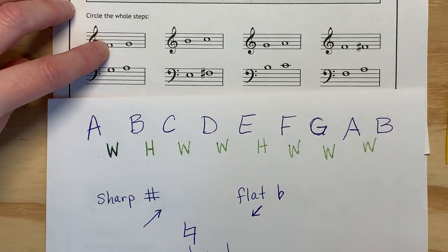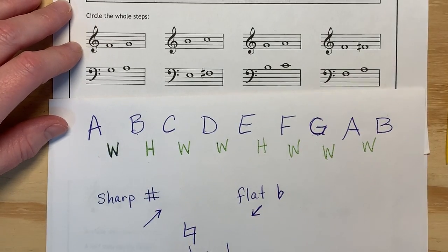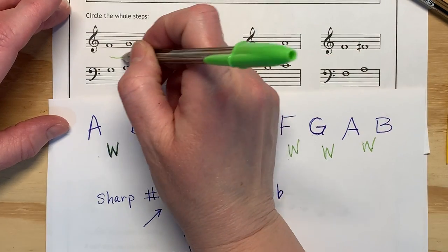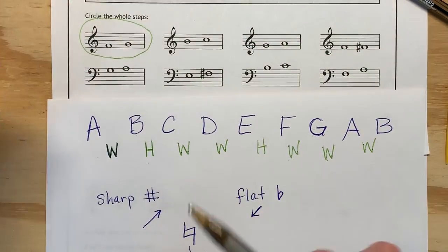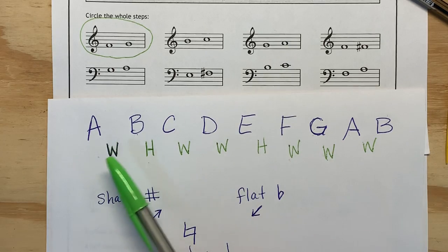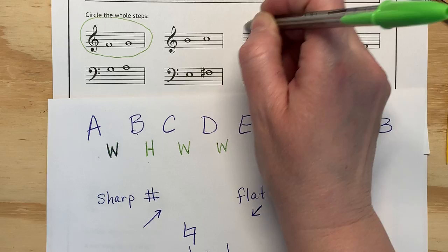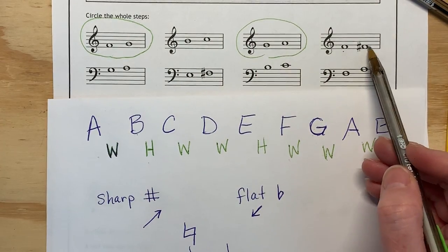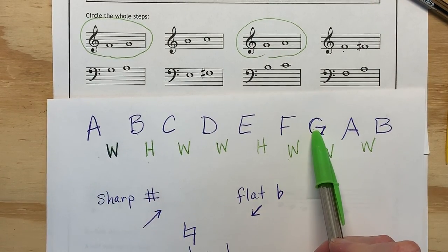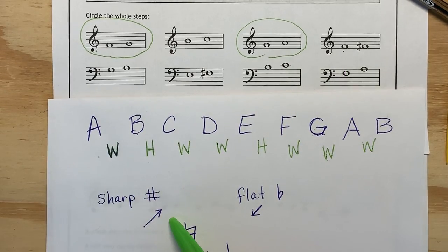So if we go from an F to a G, that is a whole step. The next one is a B to a C. So we see a B to a C is a half step, so don't circle it. A G to an A, whole step. So we can circle that one. An F to an F sharp. That's that in between one. So that's a half step. Don't want to do that.